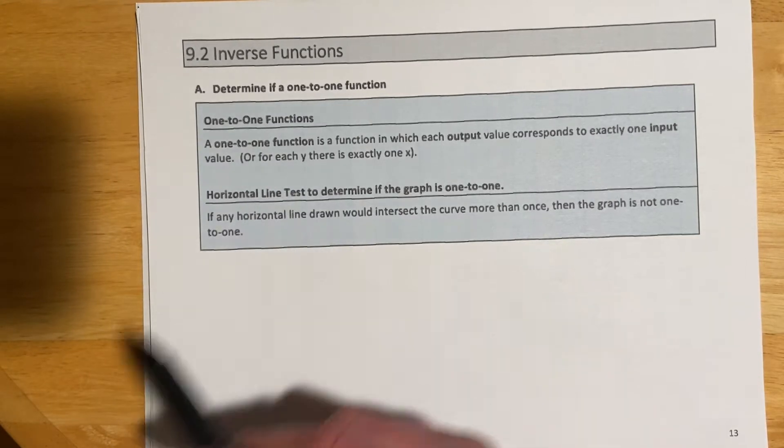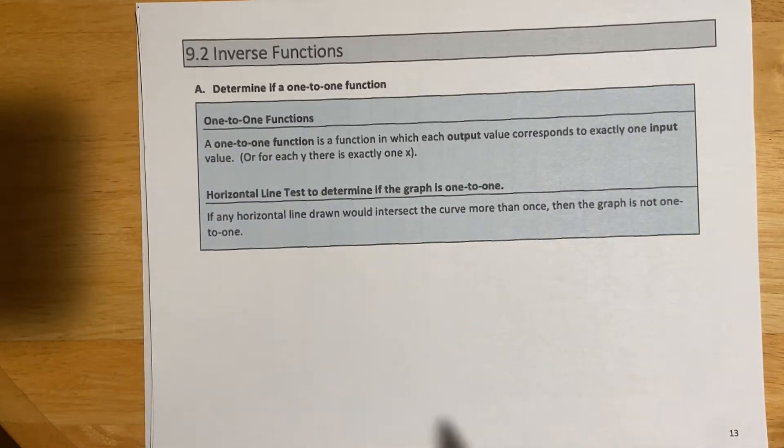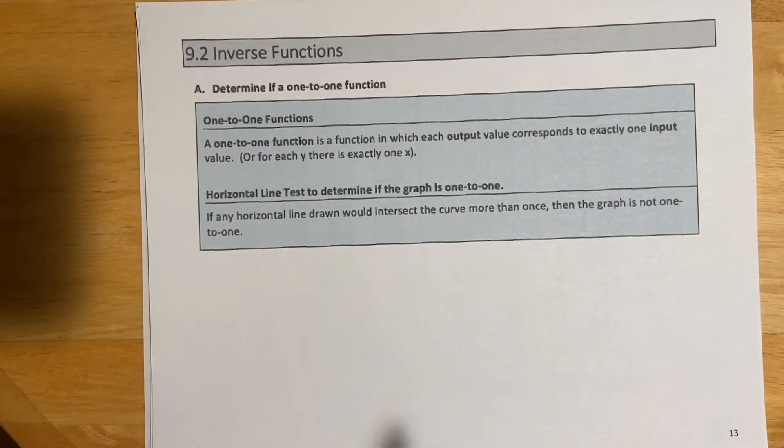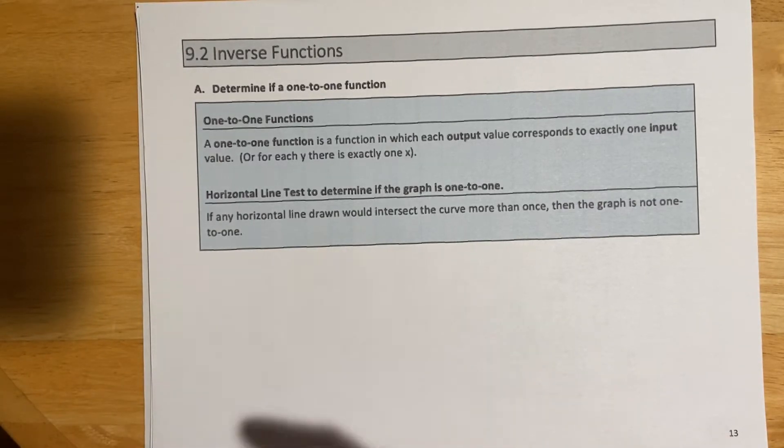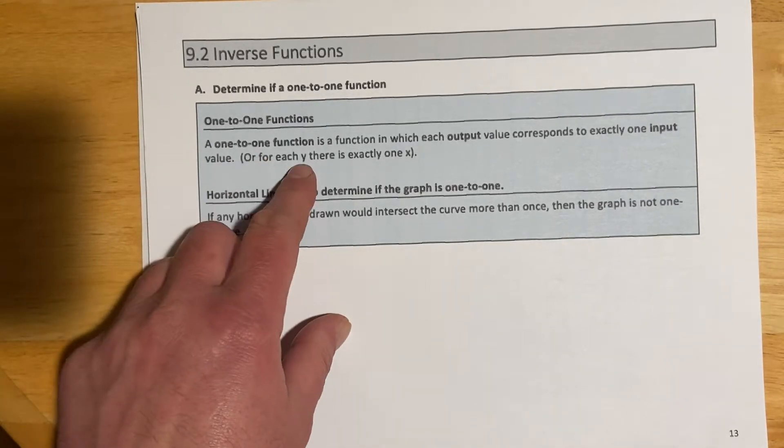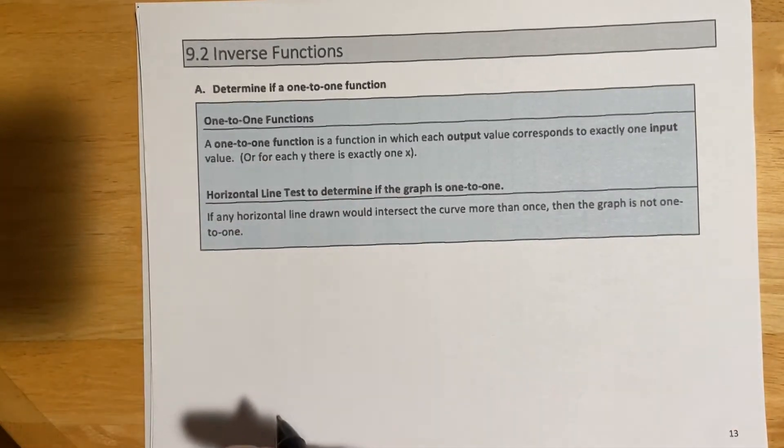A one-to-one function is a function in which each output value corresponds to exactly one input value. That sounds probably a little familiar from our function definition, except it's backwards. When we were talking about is it a function, we said for each x there's only one y, and now for each y there's also exactly only one x.